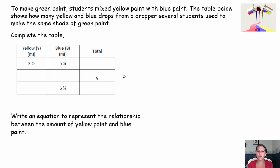Let's take a look at our first example. To make green paint, students mixed yellow paint with blue paint. The table below shows how many yellow and blue drops from a dropper students use to make the same shade of green paint. Your job is going to be to complete the table and then to write an equation to represent the relationship between the amount of yellow paint and the amount of blue paint. Pause the video, try it out, come on back.